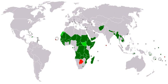Slums form and grow in different parts of the world for many different reasons. Causes include rapid rural to urban migration, economic stagnation and depression, high unemployment, poverty, informal economy, forced or manipulated ghettoization, poor planning, politics, natural disasters and social conflicts. In some cities, especially in countries in Southern Asia and Sub-Saharan Africa, slums are not just marginalized neighborhoods — they are widespread and home to a large part of the urban population. These are sometimes called slum cities.